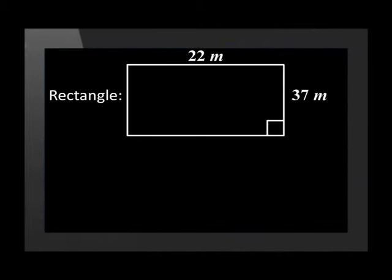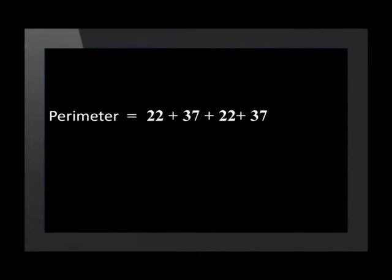Let's look at an example of working with a rectangle. In this rectangle, the length of the sides is equal to 22 and 37 centimeters. Remember that opposite sides of the rectangle are equal. We calculate the perimeter by adding the length of all the sides together. So we add 22 plus 37 plus 22 plus 37.